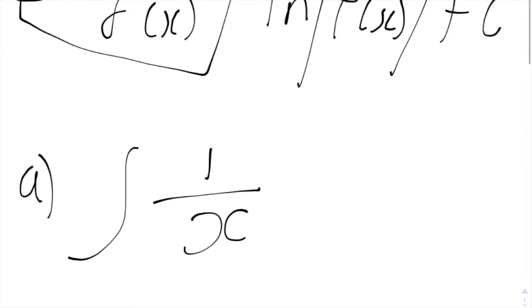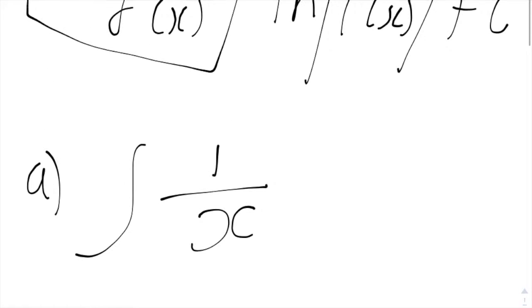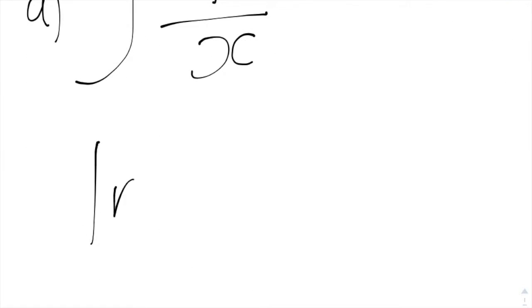So, 1 over x. Well, if we differentiate the x, we're going to get 1. So this is a nice easy one: ln|x| plus c with our modulus sign.